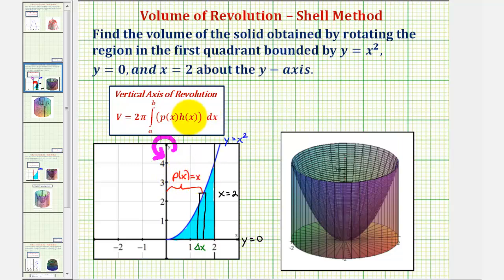and then h of x, the height of this rectangle, would be this length here, which would just be the function value given by y equals x squared. So h of x equals x squared.